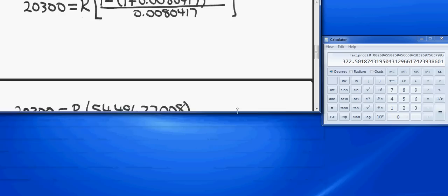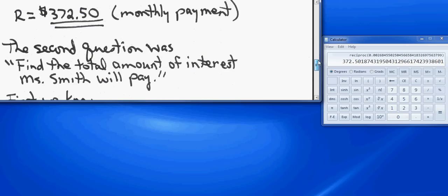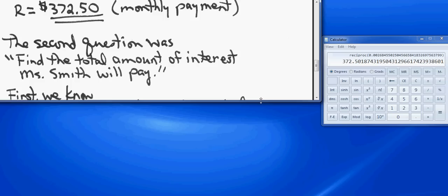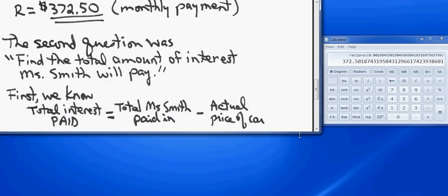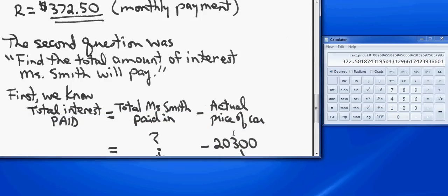As I mentioned a few minutes ago, there was also a second question: find the total amount of interest Ms. Smith will pay. In order to do that, you have to understand what the interest is. The interest is the amount she paid in over the course of that loan minus what the car was actually priced. We know the car was priced at $20,300, so the interest is how much she paid in all together minus the actual price of the car.